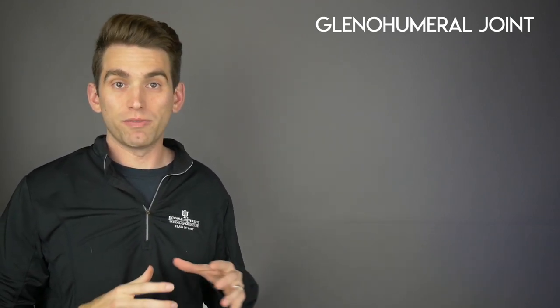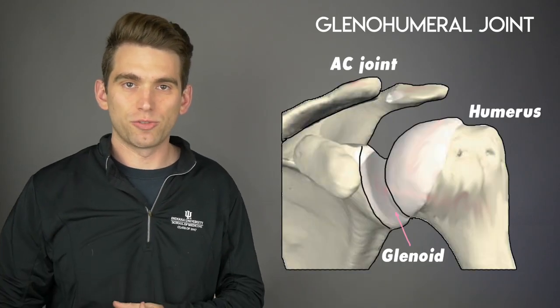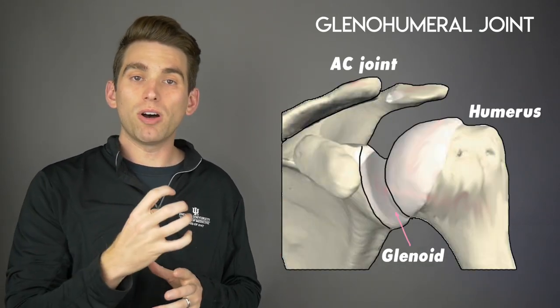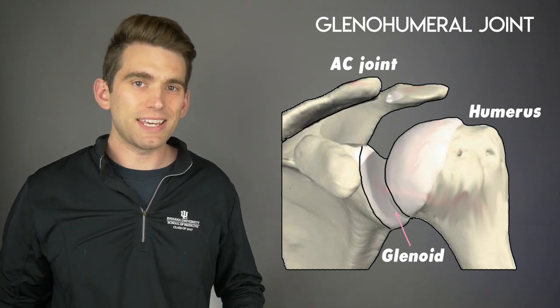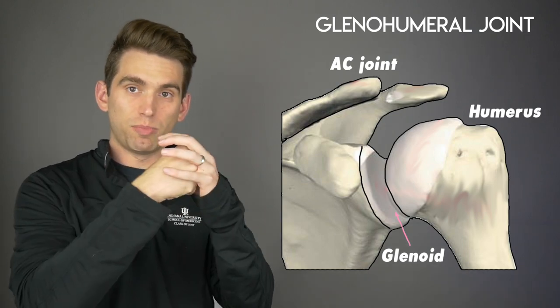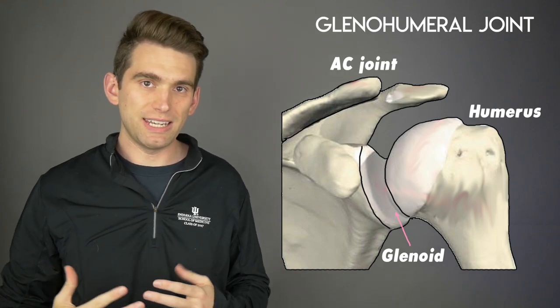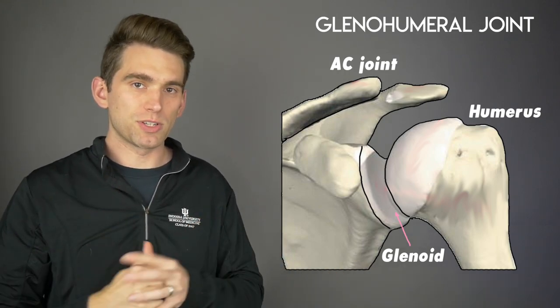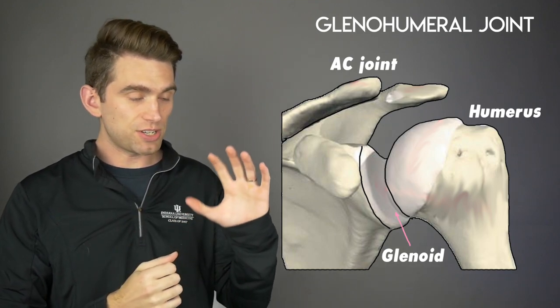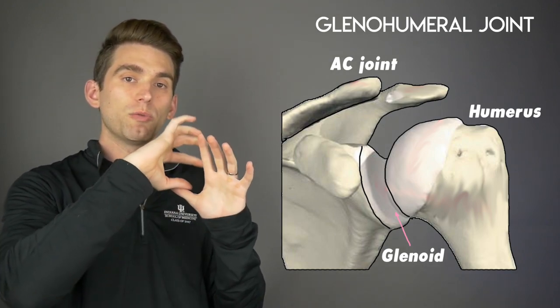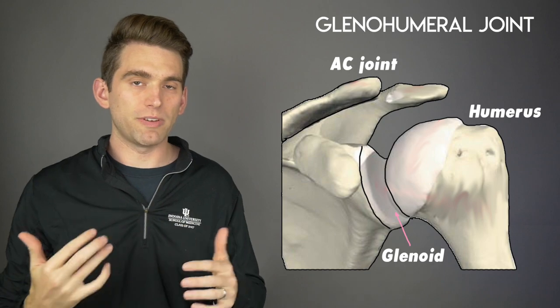Let's dive into anatomy a little bit here and then we'll come back to the play to draw some connections. The shoulder has the most mobility of any of the large joints in our body, and in part that's because of the shape of the joint. The socket of the shoulder joint is the glenoid, which is part of the scapula, and the ball is the head of the humerus. But unlike the hip where it's a really deep socket, the shoulder joint is more like a golf ball sitting on a tee — there's really no enclosed cup that the shoulder joint sits in.